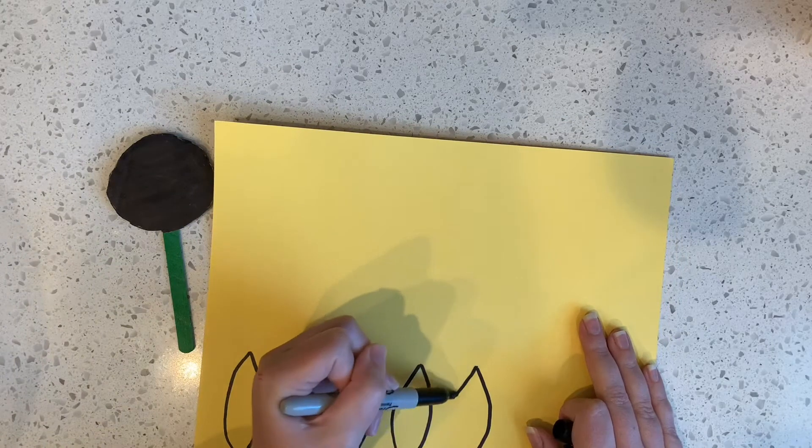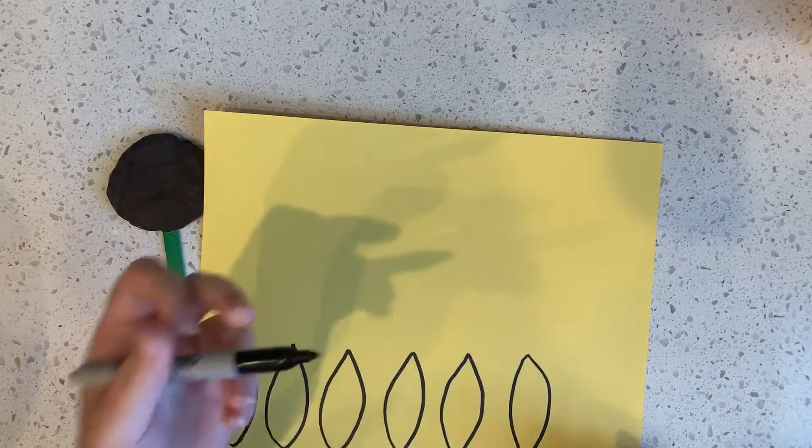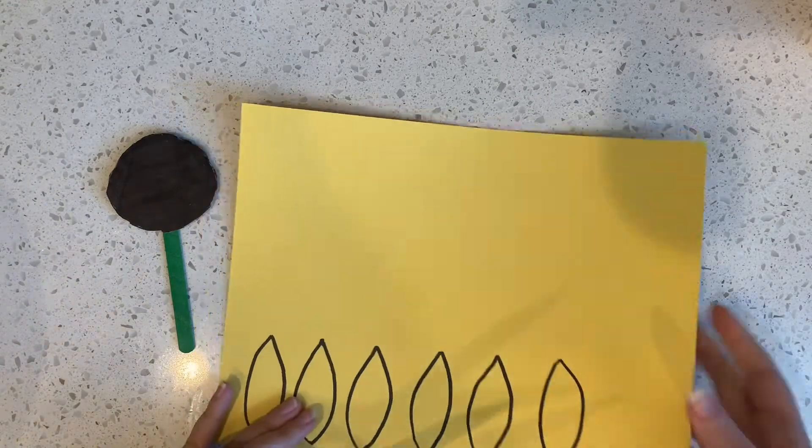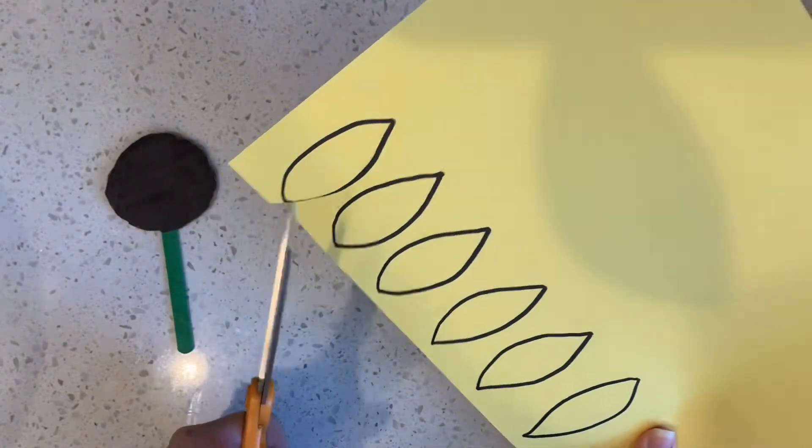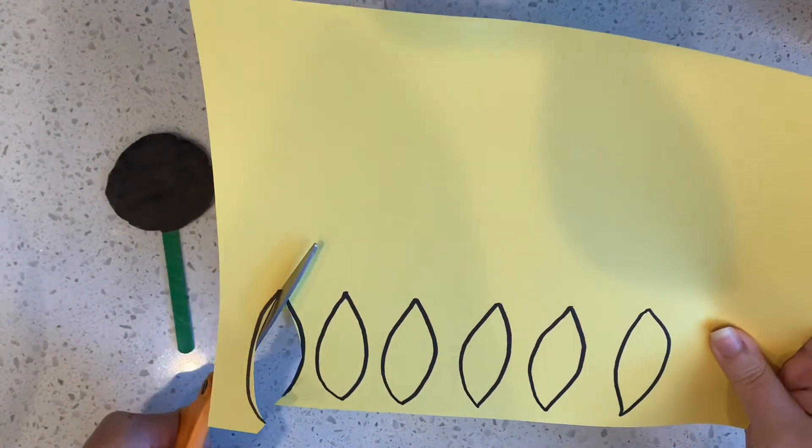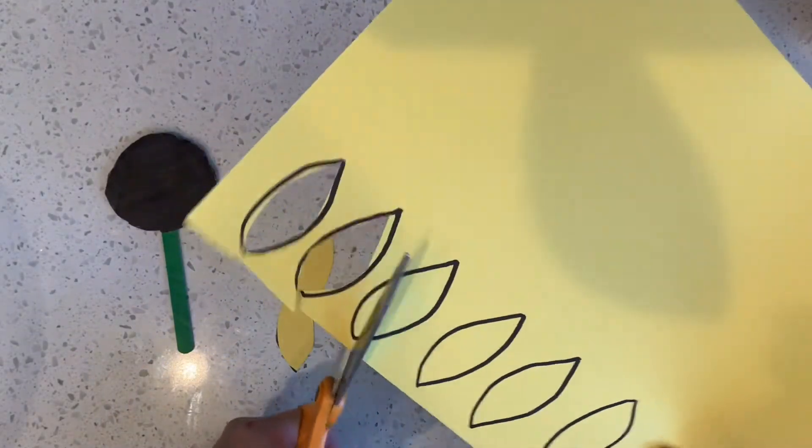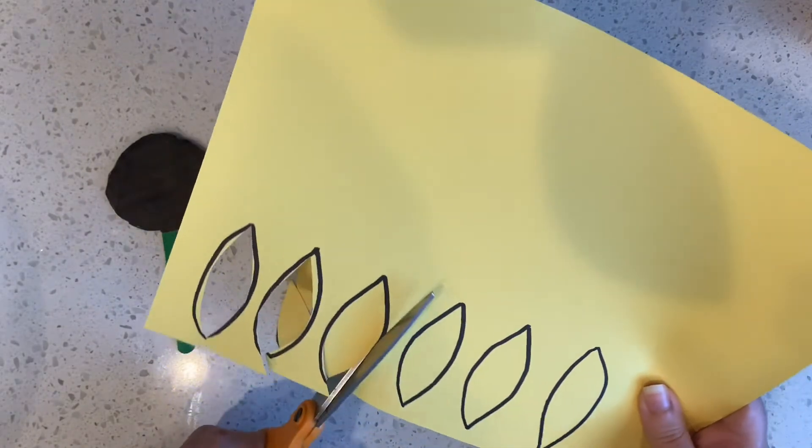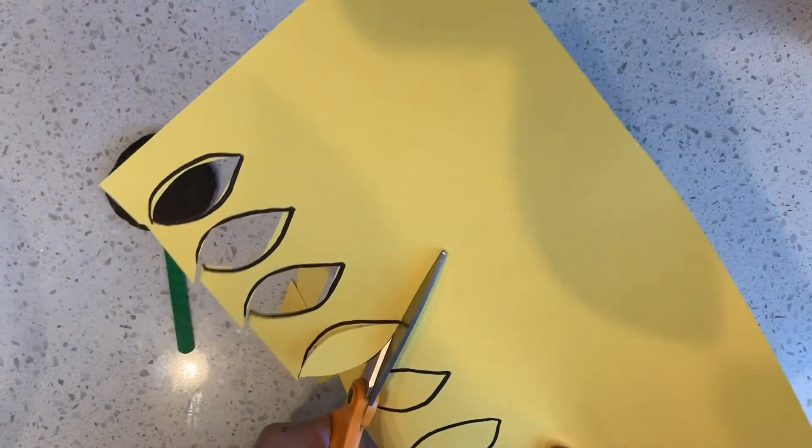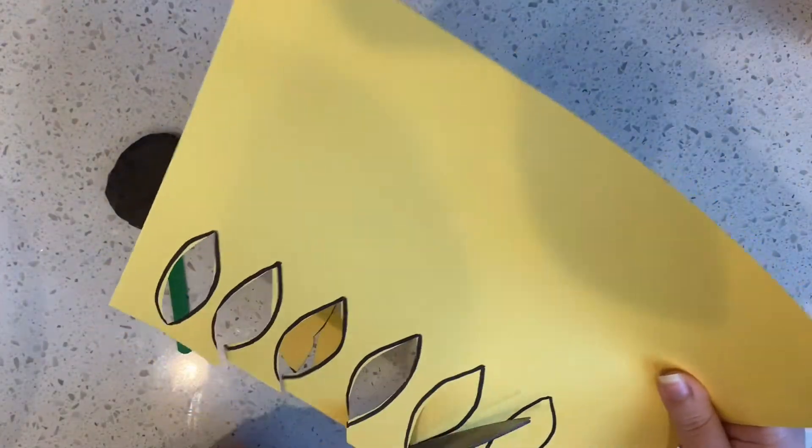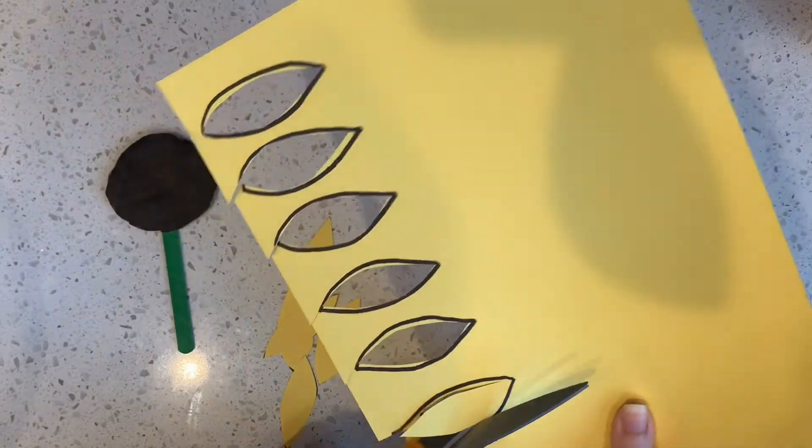Whatever you want to do because we're going to glue them on the back of our black middle part. So I'm going to start with six and see if that's enough. But maybe you know that that's not enough and you do 10 or 12 or 20. You can make a giant sunflower. Have you ever seen those ones that are so big that are taller than you? They're so cool. Two, three, four, five, six.